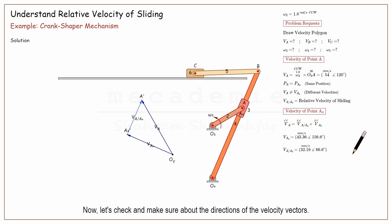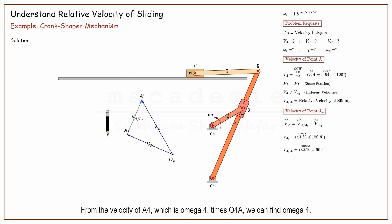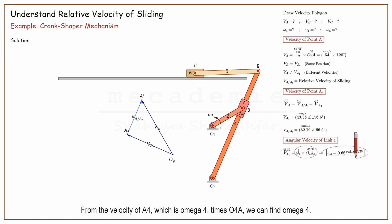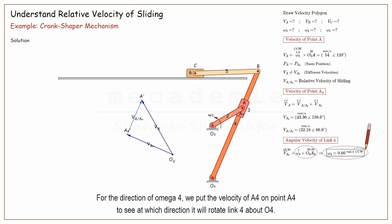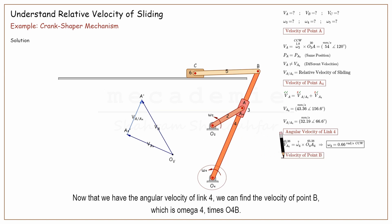Now let's check and make sure about the directions of the velocity vectors. According to this equation, velocity of A must equal velocity of A with respect to its footprint A4 plus velocity of A4. From the velocity of A4, which is omega 4 times O4A, we can find omega 4. For the direction of omega 4, we put the velocity of A4 on point A4 to see at which direction it will rotate link 4 about O4.